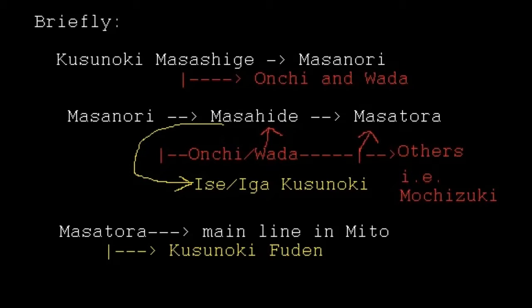At the same time, the Onchi family and the Wada family are relevant. The Wada and Kusunoki are actually relatives — essentially the same family — and the Onchi is related to them as well. The Onchi and Wada are the chief retainers of Kusunoki. So while the main line goes through Kusunoki descendants, there is also an auxiliary line through the Onchi and Wada, which bleeds back into the main line around the time of Masahide.